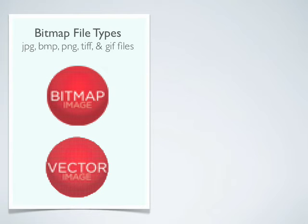Now let's take another look at bitmap and vector file types, because this can be a little bit confusing. If you have a JPEG, BMP, PNG, TIFF, or GIF file, you have a bitmap image inside that file. If a vector image is saved as one of these file types, it has been converted or rasterized to a bitmap image.